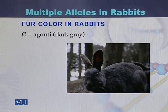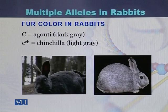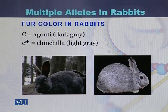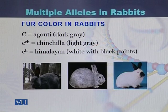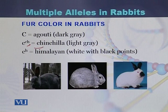If the fur color in rabbits is dark gray, which is also called agouti, there is a C allele of the gene that controls this color. If there is the C allele, it will produce the agouti color. If there is the cʰ allele, then it will be chinchilla color.